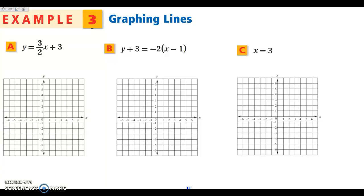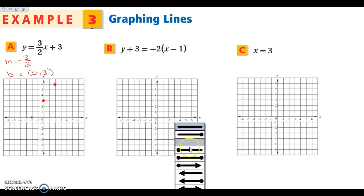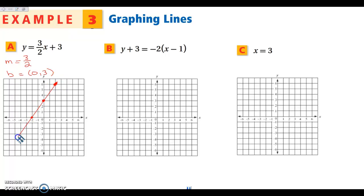The last thing we're going to look at is graphing these lines. This equation is in slope-intercept form, so my slope is 3 halves and my y-intercept is 3 — the point (0, 3). When graphing, start with a point you know: I'll put a point at y equals 3. With slope 3 halves, I go up 3 and to the right 2. I could also go down 3 and left 2. Then connect those points to get my graph.